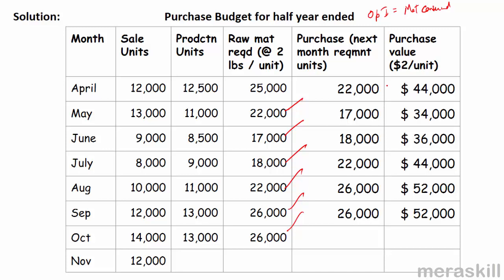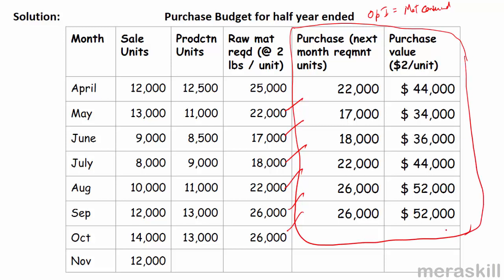Applying the rate of $2 per pound: 2 × 20, 17, 18, 22, 26, and 26 thousand pounds gives the purchase values. This purchase budget shows both the number of units and the cost — that is the material purchase budget.